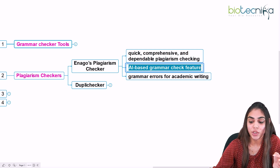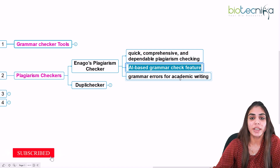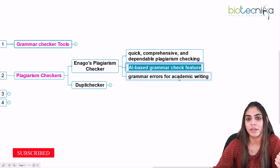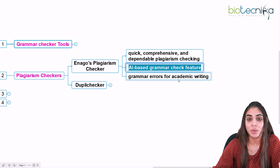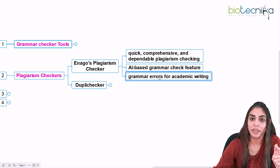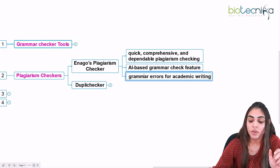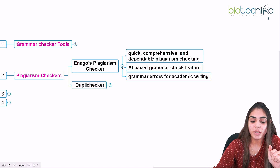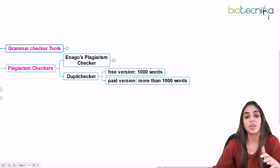The advantage of Enago's Plagiarism Checker is that it has an AI-based grammar check feature. If any mistake is detected, it will correct it. If you have copy-pasted anything, that copy-pasted sentence will be rephrased so you can use the reframed sentence in your manuscript. It can also detect grammatical errors in academic writing and correct them. The next tool is Dupli Checker.